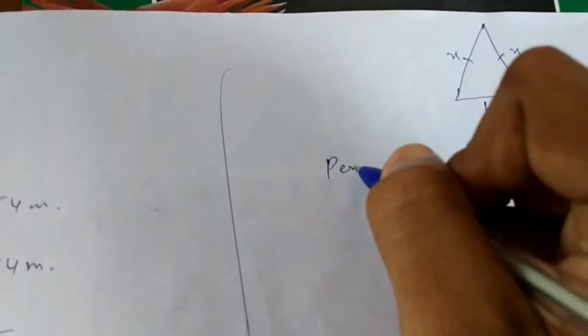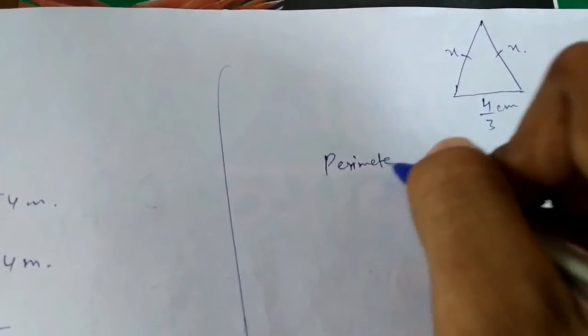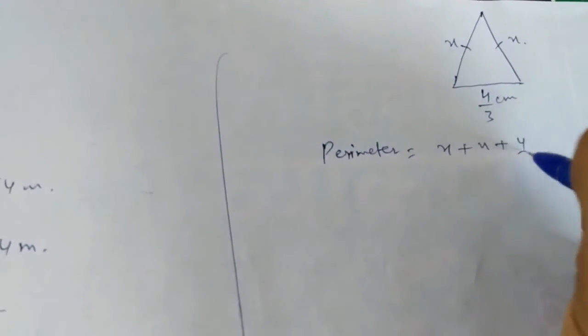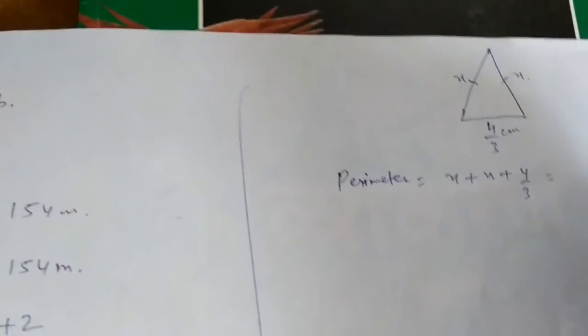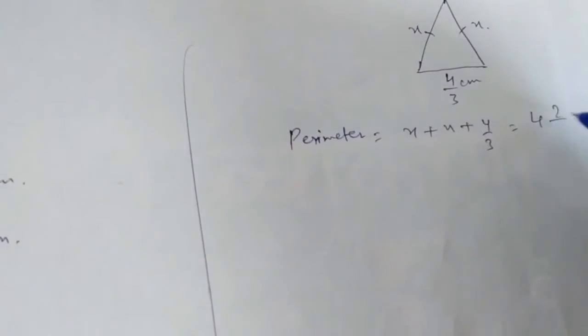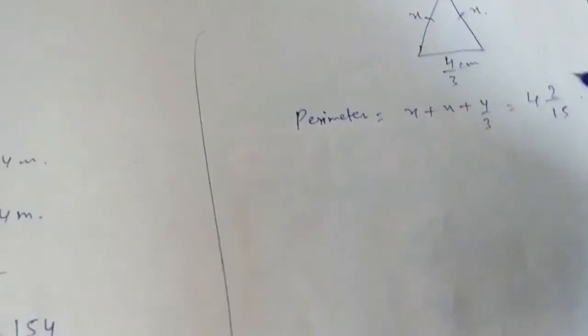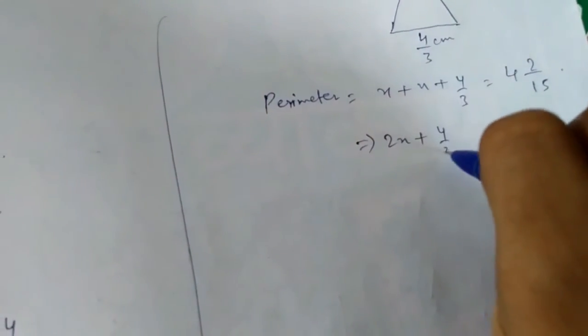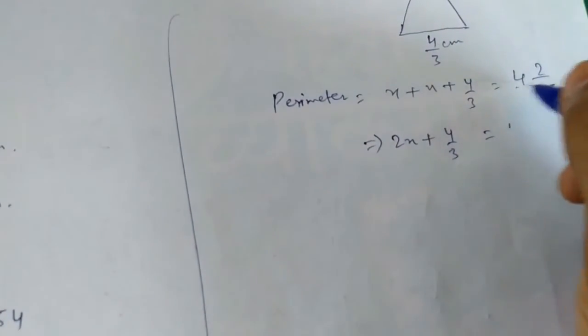The perimeter is x plus x plus 4 by 3 equals 4 and 2 by 15. So 2x plus 4 by 3 equals, converting to improper fraction, 60 plus 2 is 62 over 15.